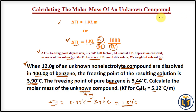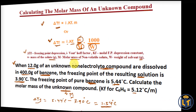You can see how I calculated the molar mass of the unknown compound using the freezing point depression formula. First I calculated Delta TF from the freezing points of the solvent and the solution, then I calculated the molar mass M value.